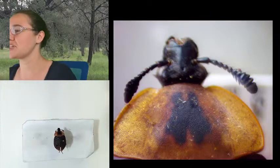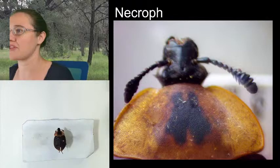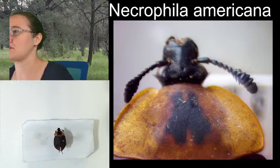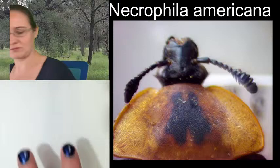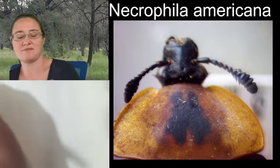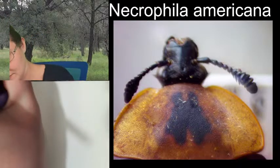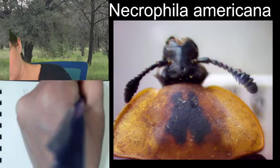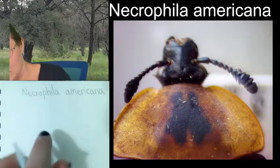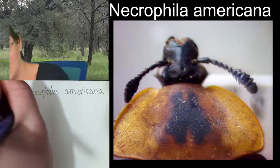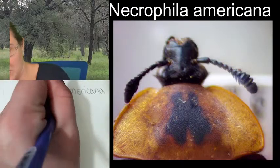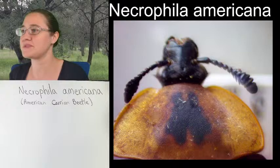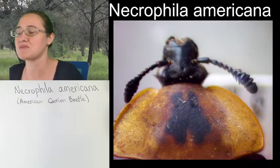I do have the species name: we call this species Necrophila americana, or the American carrion beetle. All right, so I'm going to go ahead and get this started. Necrophila americana — the American carrion beetle.